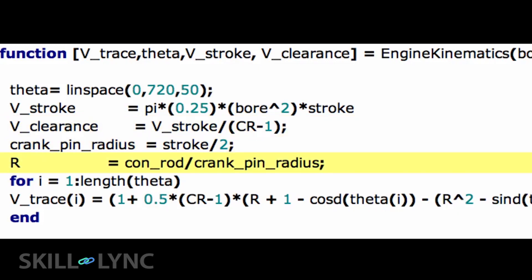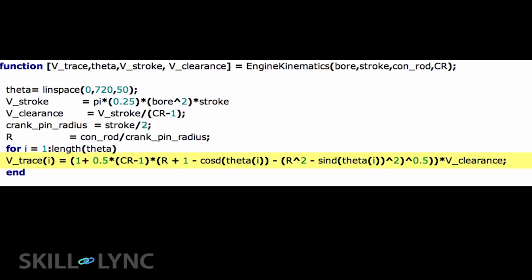The crank pin radius is half of the stroke length, and finally we define a constant R, which is the ratio of connecting rod length and the crank pin radius. Finally, we use the equation from Hayward to calculate the volume for each crank angle.